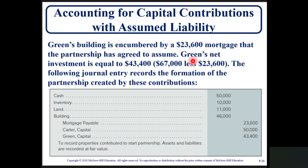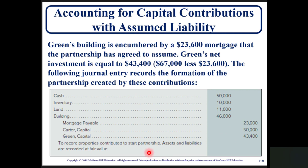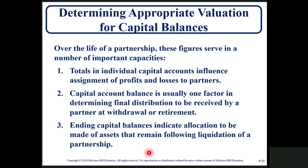Accounting for capital contributions with assumed liability: Green's building is encumbered by a $23,600 mortgage that the partnership has agreed to assume. Green's net investment is now $43,400, which is $67,000 less $23,600. The journal entry records cash of $50,000, inventory of $10,000, land of $11,000, and building of $46,000, with a mortgage payable of $23,600. Carter's and Green's capital accounts are credited for $50,000 and $43,400 respectively. Assets and liabilities are recorded at fair value.